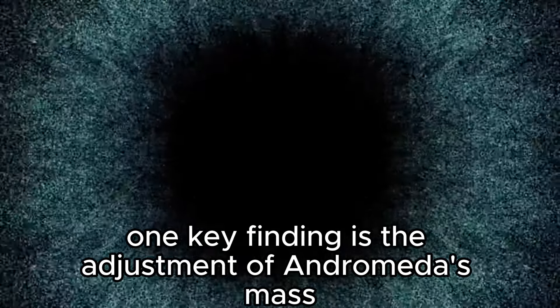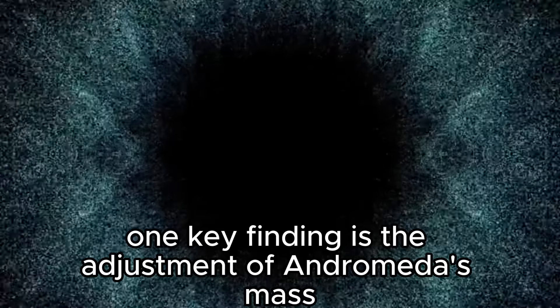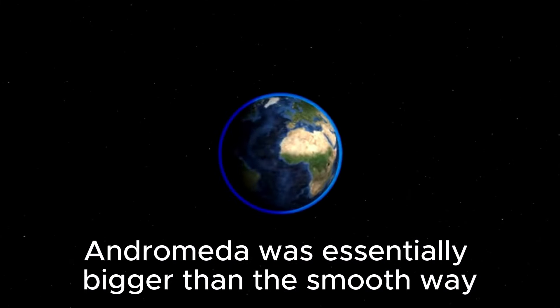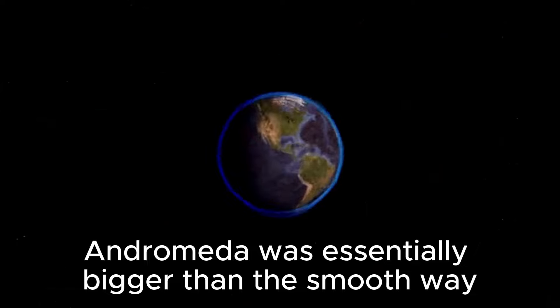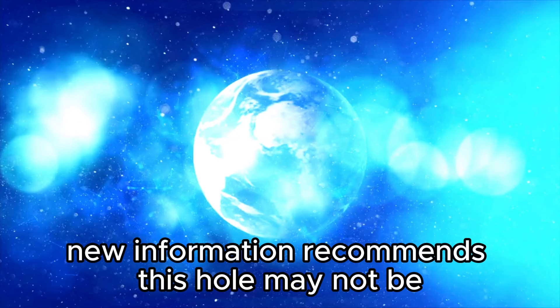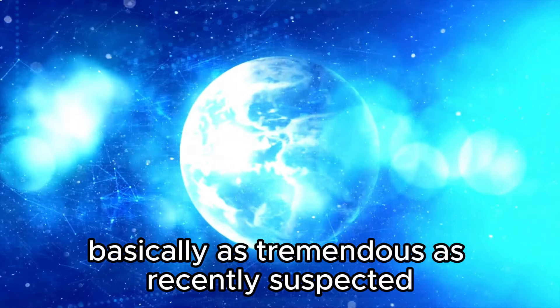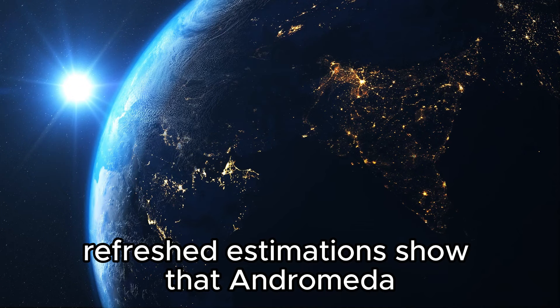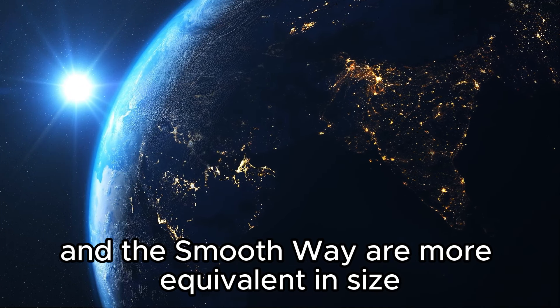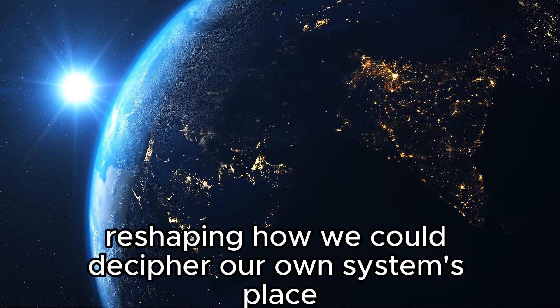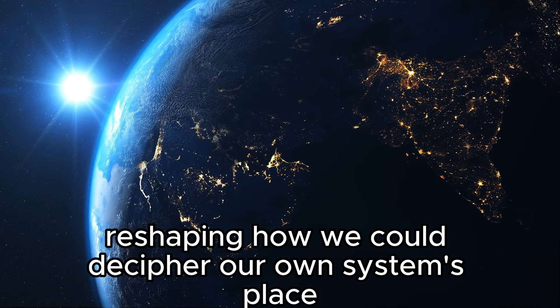One key finding is the adjustment of Andromeda's mass. Prior gauges said Andromeda was essentially bigger than the Milky Way. However, new information recommends this hole may not be as tremendous as recently suspected. Refreshed estimations show that Andromeda and the Milky Way are more equivalent in size, reshaping how we could decipher our own system's place.